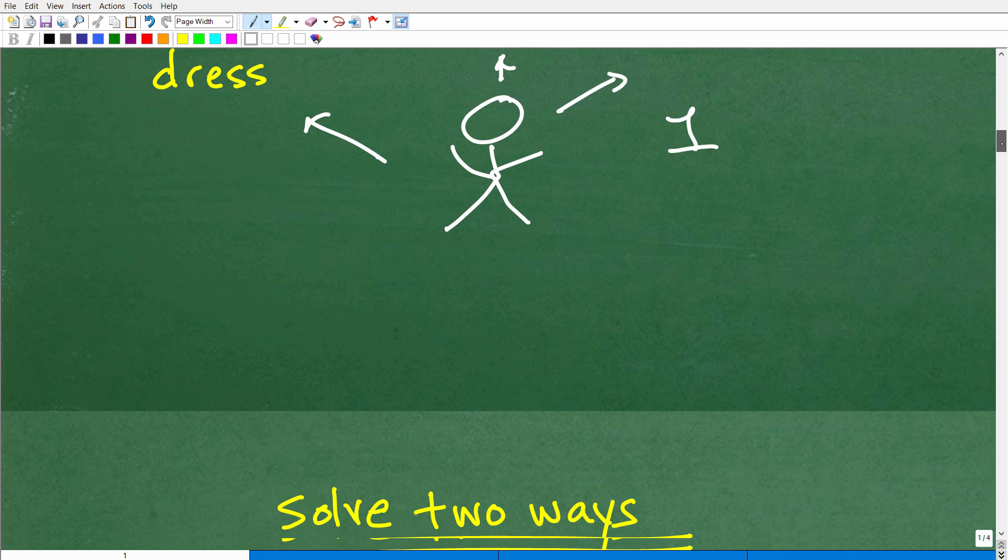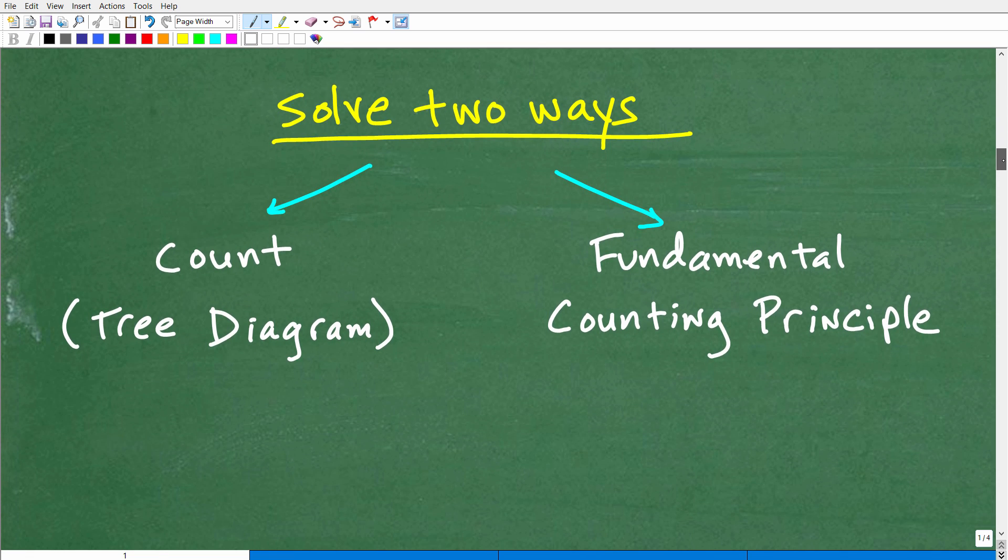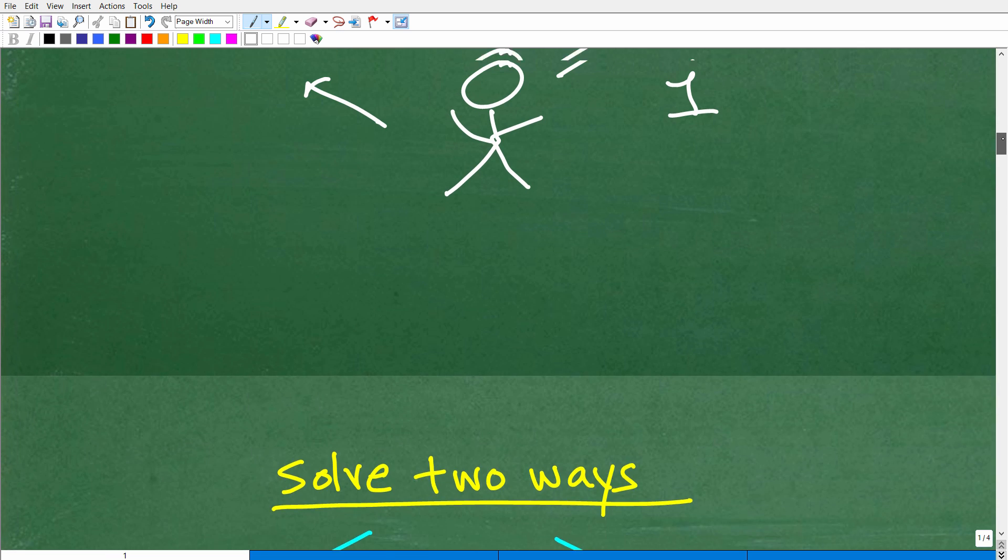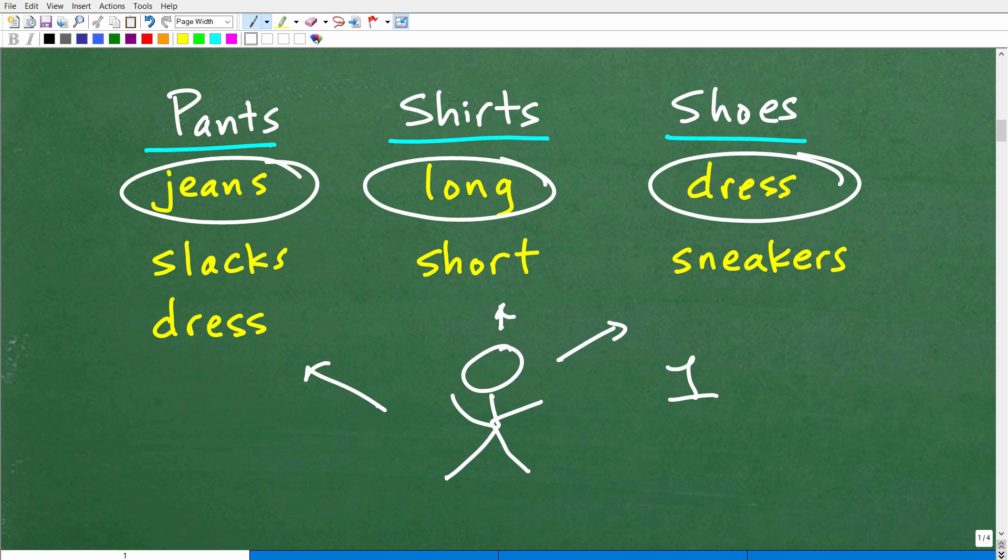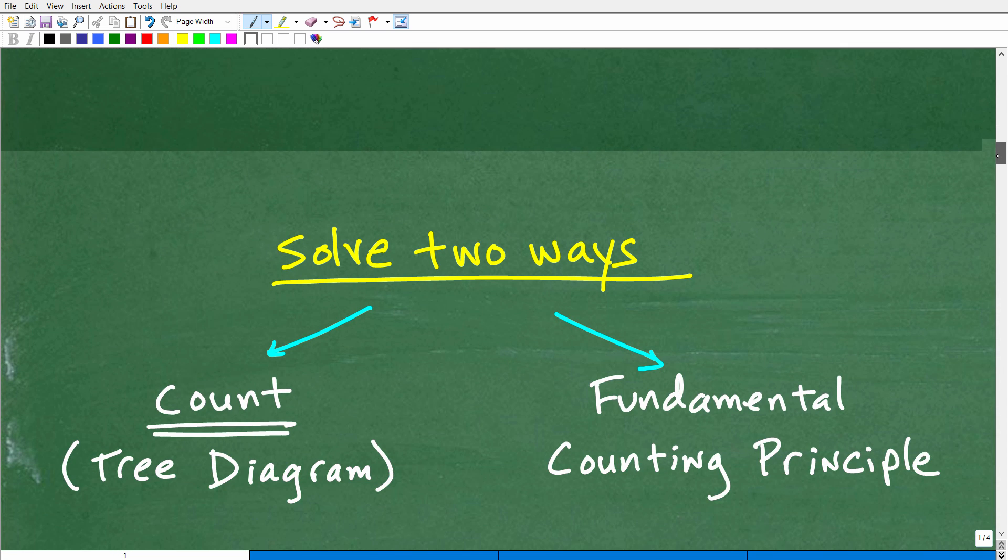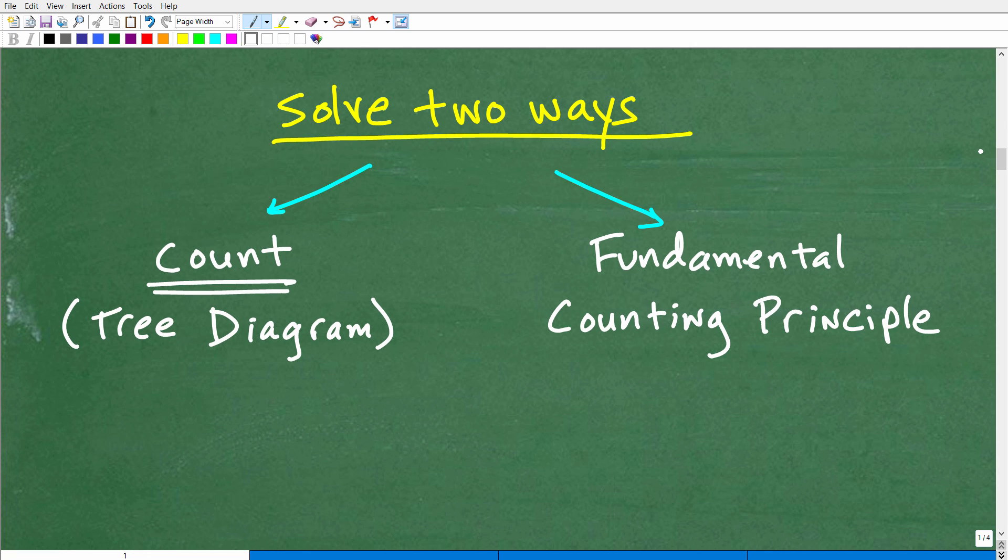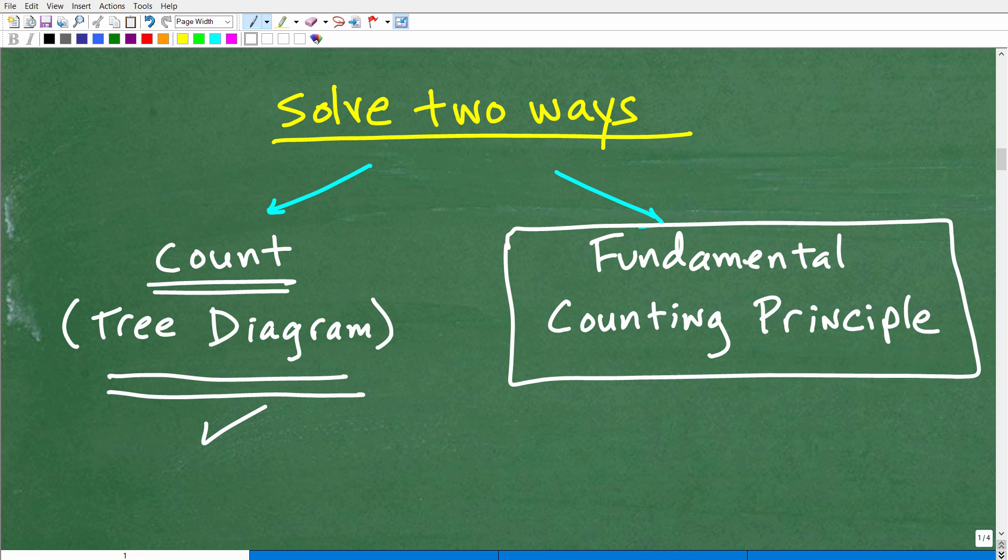But let's go ahead and talk about the two approaches that you could solve this problem with. When you're dealing with counting problems, in general, there's two ways you can solve them. The first is to actually count things up. But when you count in a visual way, we actually can construct something called a tree diagram. The second thing we could do is use some mathematical principles, and the one that I want to introduce you to is the fundamental counting principle.